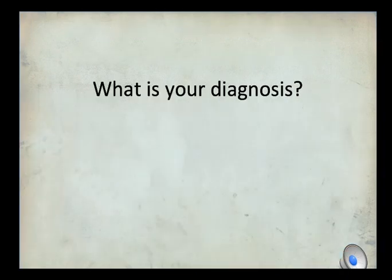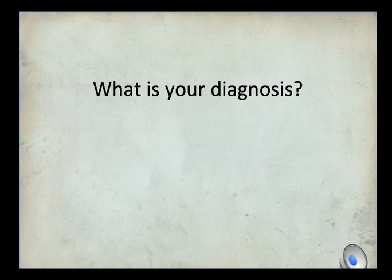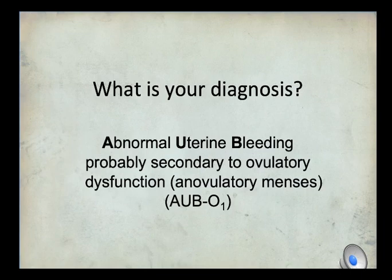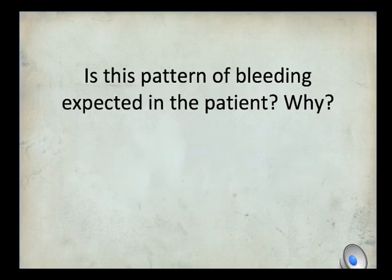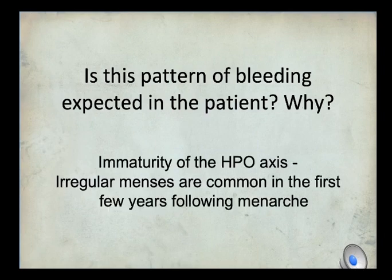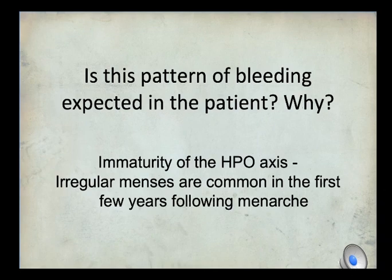Anovulation, at about 46%, is the most common cause of AUB in adolescents, followed by hematologic diseases at about 33%. Our diagnosis in this case is AUB secondary to ovulatory dysfunction — PALM-COEIN diagnosis is AUB-O subscript 1. This pattern of bleeding is expected because of the immaturity of the HPO axis; irregular menses are common in the first few years following menarche. However, they are expected to become regular in the next 5 to 7 years, as in puberty the HPO axis has not yet developed and the necessary hormonal feedback to sustain the endometrium is not yet present.